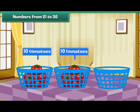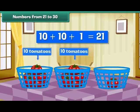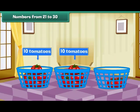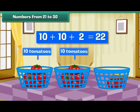Here is an empty basket. Let us place a tomato inside it. We have two tens and one — that is 21 tomatoes. Place one more tomato in the third basket. We have two tens and two — that is 22 tomatoes.